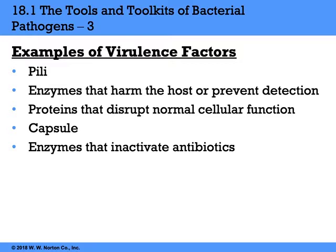These virulence factors are the characteristics that allow this to take place. Some examples of virulence factors include pili — pipes that allow either attachment or transfer of genetic material — enzymes that damage the host or prevent immune detection, proteins that destroy normal cell function, the presence of a capsule which is protective and can present an endotoxin on the surface, and enzymes that can inactivate antibiotics.